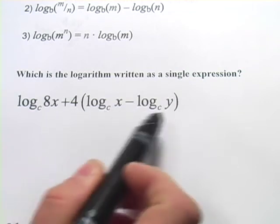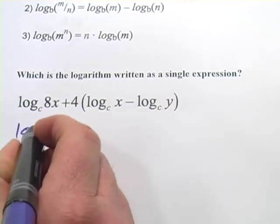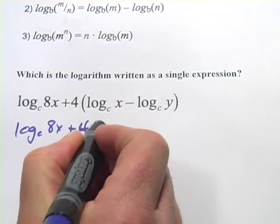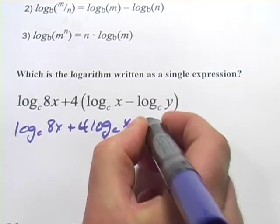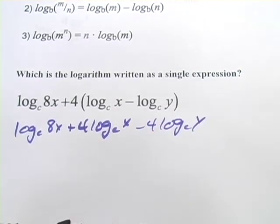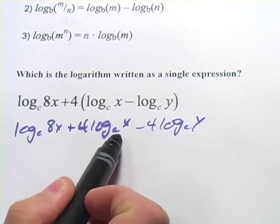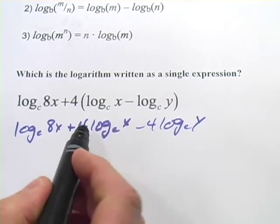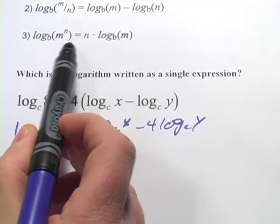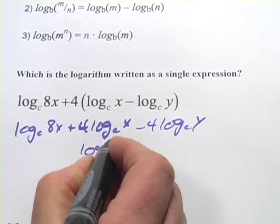The first thing I'm going to do is deal with the parentheses by multiplying through this 4. So we'd end up with log base c of 8x plus 4 times the log base c of x minus 4 times the log base c of y. Now the 4 times log base c of x — we're going to make that the exponent, going from this form to this form — so this becomes log base c of x to the fourth.